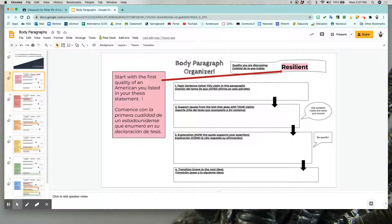The first thing is up in this flag looking space in the corner and it's titled Quality You Are Discussing. Over here in this pink box, it tells you that you are starting with the first quality of an American that you listed in your thesis statement. So your thesis statement should read an American is and then three things—blank, blank, and blank. You are picking the first one and putting that word or phrase up here. So for the purpose of this example, it is resilient. An American is resilient.